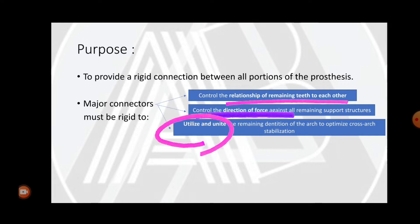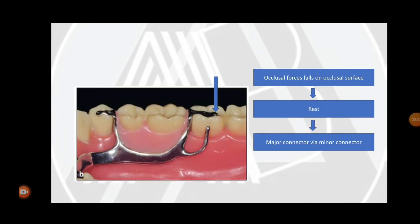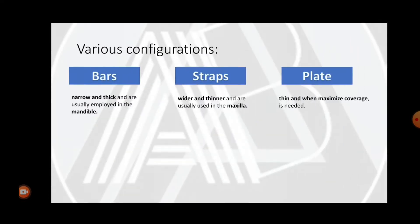The main function of the major connector is to provide rigidity to the prosthesis. Occlusal forces fall onto the occlusal surface via the rest, then move on to the major connector via the minor connector. That is the basic direction of force transfer.